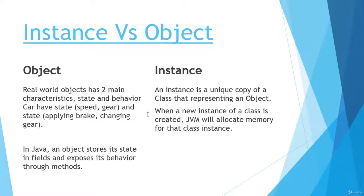Now what is the instance? An instance is a unique copy of a class that represents an object. When a new instance of a class is created, the JVM will allocate memory for that class instance. The major difference is: an object represents the states and behaviors of a class, and an instance is a copy of the class that represents the object.